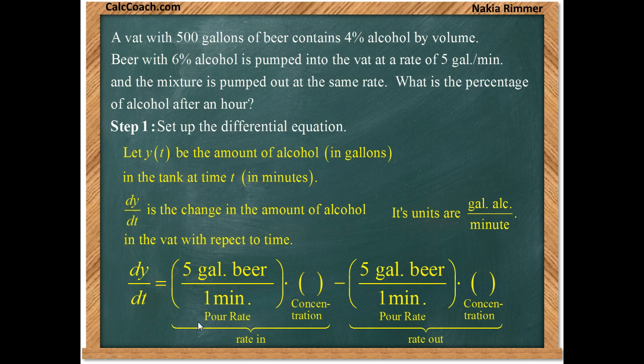Within each of these, we have to set up the following product: how fast it's being poured times the concentration of alcohol. The key to this problem is that how fast it's being poured out and in is exactly the same. They're both five gallons of beer every minute. So we can fill that in. The harder part to get our hands on is the concentration.